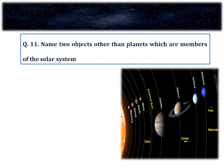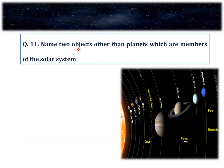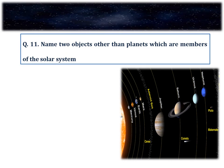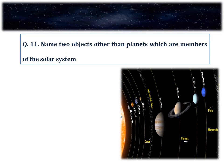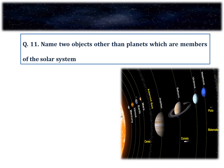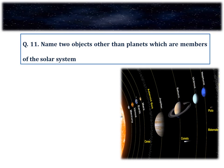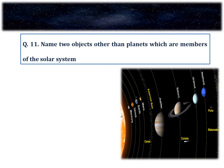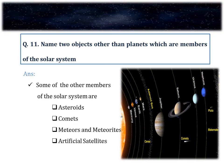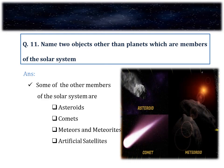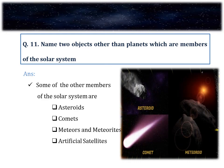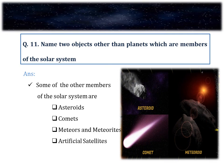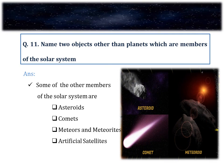Question number 11. Name two objects other than the planets which are members of the solar system. Other than the planets and the sun, there are a large number of bodies that revolve around the sun. Some of these members are asteroids, comets, meteors, meteorites and artificial satellites.